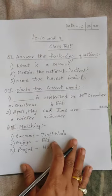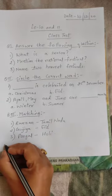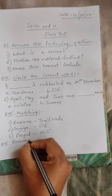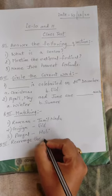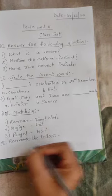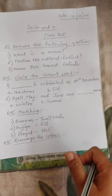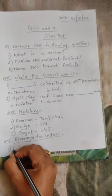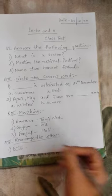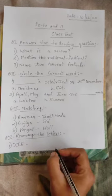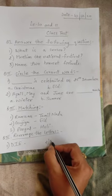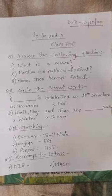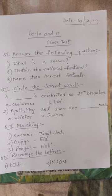Question number four — rearrange the letters. Like jumbling of the words, make a correct word. Write the answer in front of the question. These were all the questions; you have to do this revision in your copy and send me the pictures after completing.